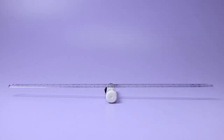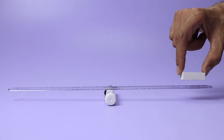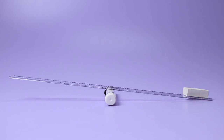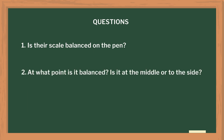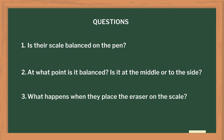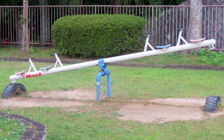The next activity is a fun one. Let us ask students to balance a scale on a pen, and then place an eraser on one side of the scale. Is the scale balanced on the pen? At what point is it balanced — at the middle or to the side? What happens when they place the eraser on the scale? This activity forms the basis to explain load, fulcrum and different types of lever. We can also remind them of the seesaw in the garden and ask them to find the similarities between this activity and that seesaw.